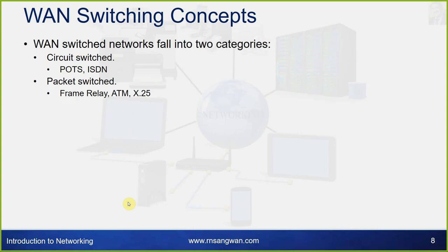WAN switched networks fall into two categories: circuit switched and packet switched. Circuit switched includes POTS and ISDN. Packet switched includes Frame Relay, ATM, and X.25.